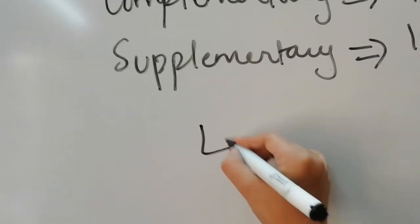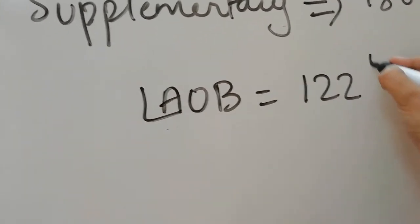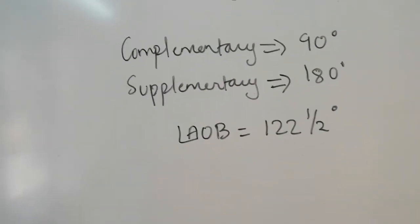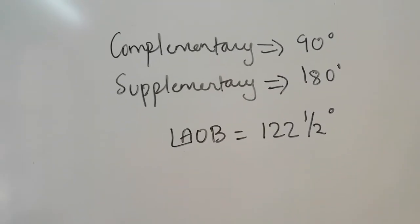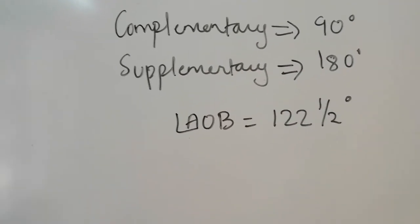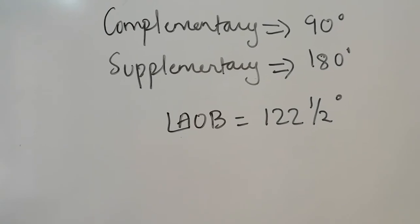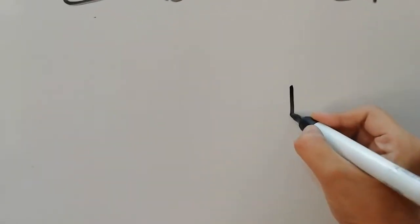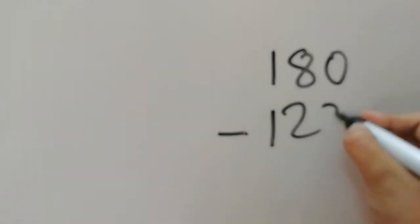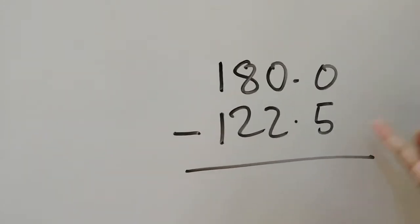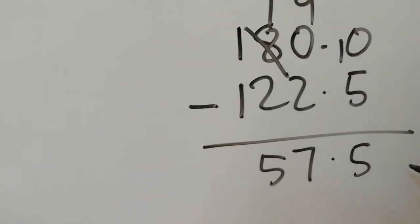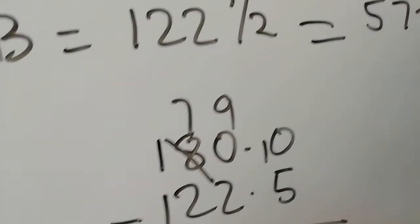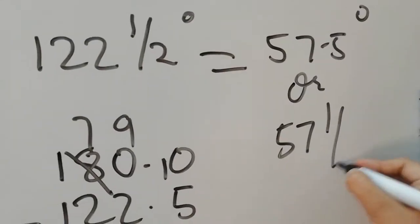If angle AOB is equal to 122.5 degrees, what is the supplementary angle to angle AOB? The answer is 180 minus 122.5. Since 0 minus 5 cannot happen, we borrow, giving 57.5 degrees — or 57 and a half degrees.